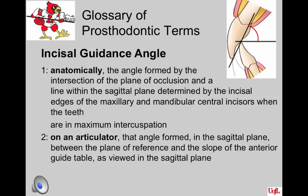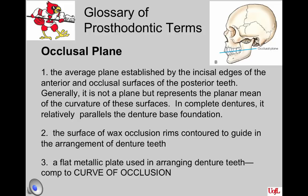From the Glossary of Prosthodontic Terms, definitions for incisal guidance angle: anatomically, it is the angle formed by the intersection of the plane of occlusion and the line within the sagittal plane determined by the incisal edges of the maxillary and mandibular central incisors when the teeth are in maximum intercuspation. On an articulator, it is the angle formed in the sagittal plane between the plane of reference and the slope of the anterior guide table. The occlusal plane is the average plane established by the incisal edges of the anterior and occlusal surfaces of posterior teeth — generally it represents a planar mean of the curvature of the surfaces, and in complete dentures it relatively parallels the denture base foundation.